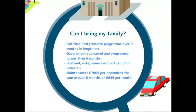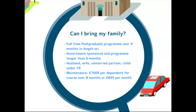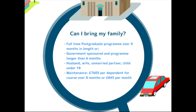Full-time postgraduate students studying for more than nine months — or government-sponsored students here for more than six months — can apply to have their husband, wife, unmarried partner, or children under 18 join them in the UK on dependent visas. Your dependents will have their own maintenance requirements, currently £7,605 per dependent for courses over eight months. If your course is government-sponsored and less than six months, it's £845 per month or partial month.